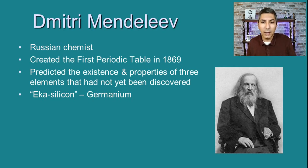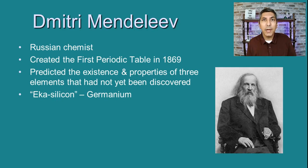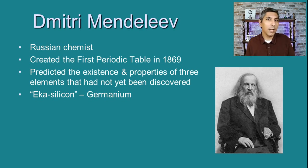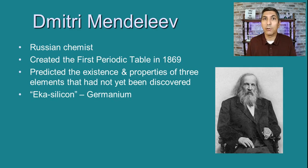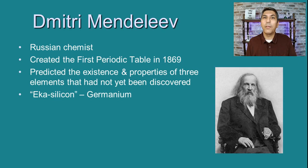One of those missing elements is what today we call germanium. Back then they had not discovered it yet, so he gave it a temporary name — eka-silicon — because it was located right underneath silicon on his periodic table. Because of the elements around eka-silicon, he was actually able to predict the properties of these elements before they were even discovered. He said they would one day discover this element and it would have a mass of about 72–73 units, a grayish-white color, and a density of about 3.0 grams per milliliter. Several years later they discovered germanium and every single one of his predictions was correct.